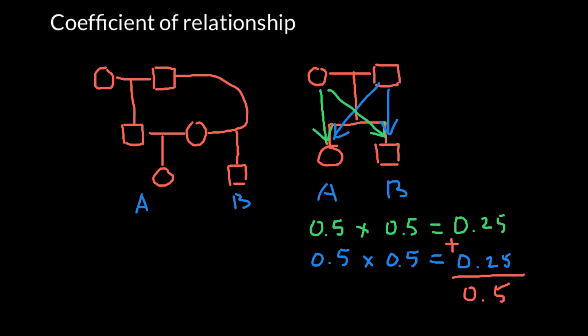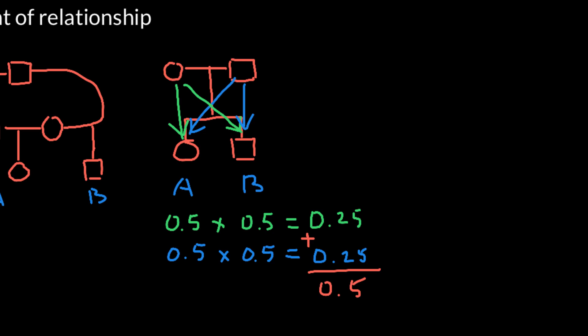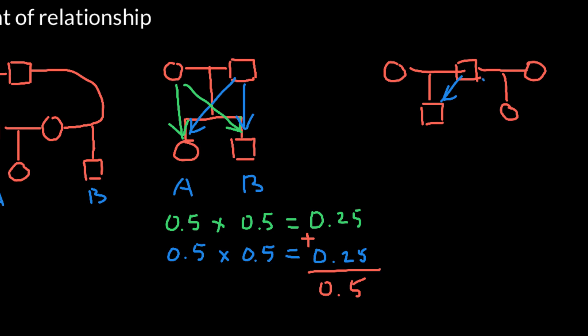Now let's take a look at a different situation. Imagine a family where a male was connected to one female and then another female — so this male married first one woman, then another woman, and in each marriage he had a child. How would these two children be related to each other? In this case, they would be related only through their father, sharing 50% of their genetic makeup from the father's side.